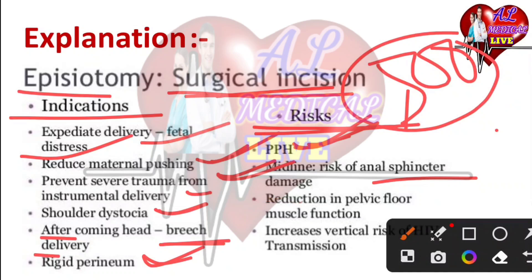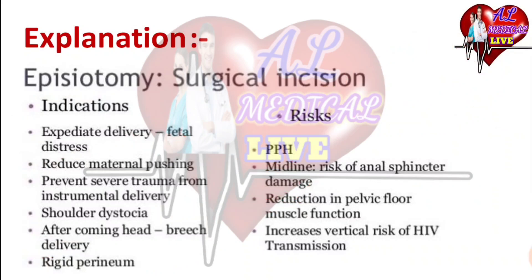Reduction in pelvic floor muscle is a disadvantage. Next: increased vertical HIV transmission. So, HIV vertical transmission is the next point.